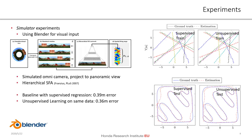We start with a simulator experiment in perfectly controlled conditions using Blender for visual input. We simulate an omnidirectional camera and use a rather arbitrary projection to panoramic views. Instead of using a single SFA step, we use hierarchical SFA because these inputs are high dimensional. The architecture is not unlike a CNN, but since it's an unsupervised approach, we do not need labeled data, there is no backpropagation, and it's much faster. On the top right you see the results for the training data using a supervised regression as a baseline and the unsupervised approach on the right. On the bottom there is independent test data. Both approaches very well represent the movement trajectory and have a similar average error of 39 and 36 centimeters respectively.